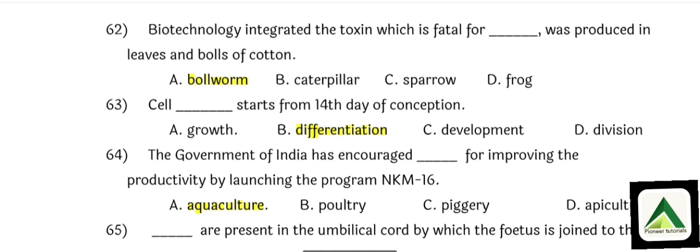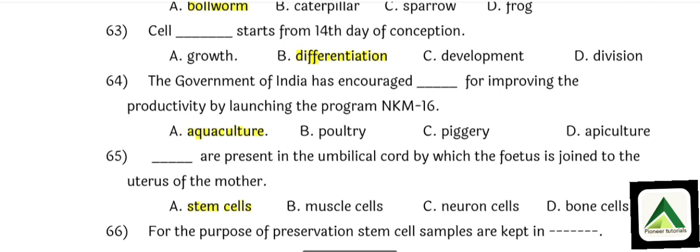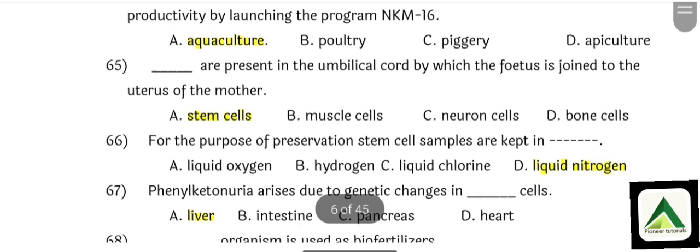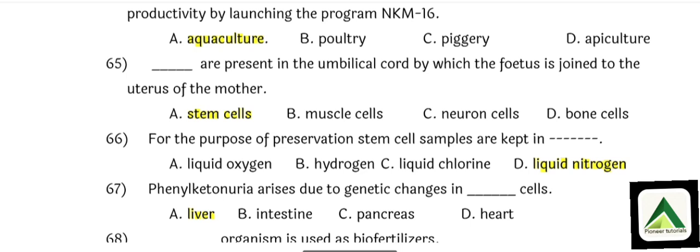Question number 62: Biotechnology integrated the toxin which is fatal for option number A: Ball worms, and was produced in the leaves and balls of cotton. Question number 63: Cell differentiation starts from the 14th day of conception. Option number: Differentiation. Question number 64: The government of India has encouraged aquaculture for improving productivity by launching the program NKM16. Aquaculture is related to water and fish. That is option number A.